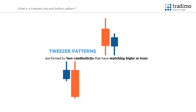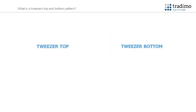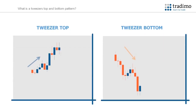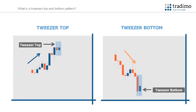Tweezer patterns are formed by two candlesticks that have matching highs or lows. As the two wicks have the same height, it has the appearance of a pair of tweezers. A discrepancy of a few pips is acceptable. There are two types of tweezer patterns: a tweezer top and a tweezer bottom. As with the engulfing candle patterns, there has to be an up or downtrend preceding the pattern — the market must not be ranging.